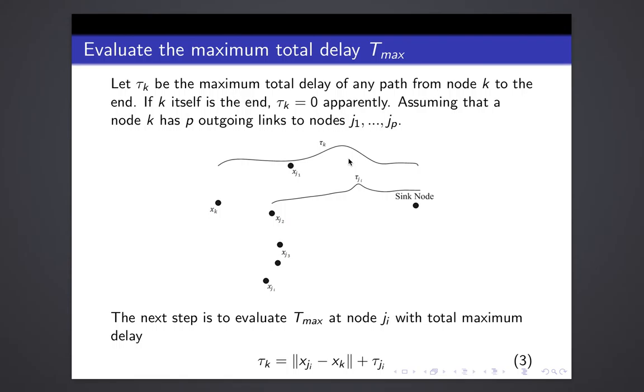Assuming that a node k has p outgoing links to the next nodes, for example j1 to jp, as we can see here in the figure, x_k is here. The next step, it may go to x_j1 or x_j2 or x_j3 or x_jp.